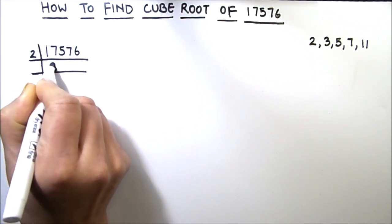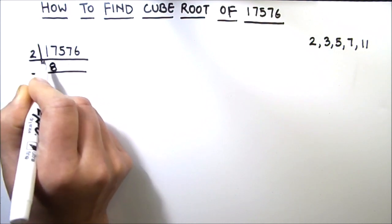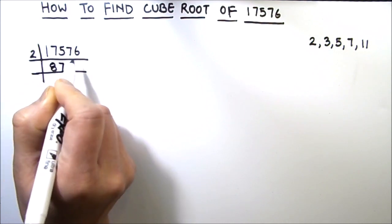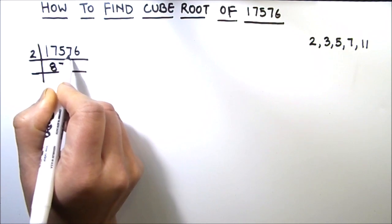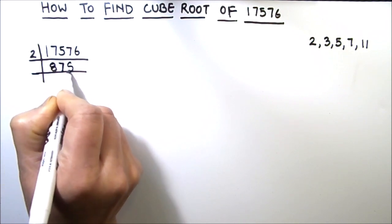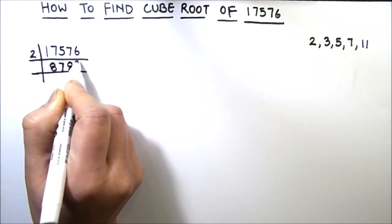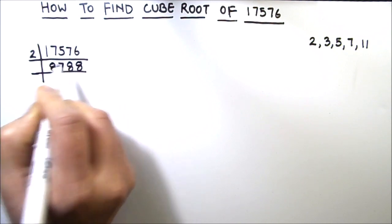So 2 times 8 is 16, 1 is carried over so this becomes 15, 2 times 7 is 14, 1 is carried over so this is now 17, 2 times 8 is 16, 1 is carried over to the next digit. So this becomes 16, 2 times 8 is 16.